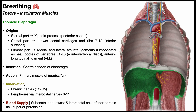Each hemidiaphragm is innervated by a phrenic nerve — left and right — each with nerve roots from C3 down to C5. If somebody has a complete spinal cord transection at the C2 level, C3 and everything below will be non-functional, meaning they will be unable to breathe independently and would require complete mechanical ventilation. The periphery of the diaphragm also receives some motor innervation from intercostal nerves at levels six through eleven.